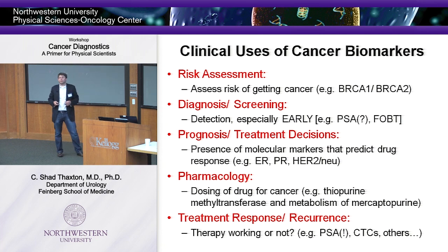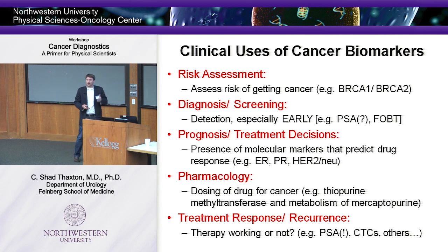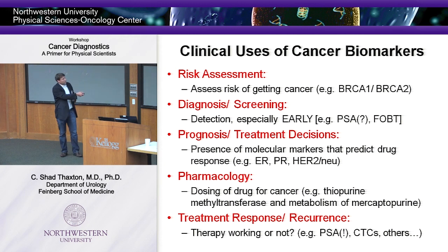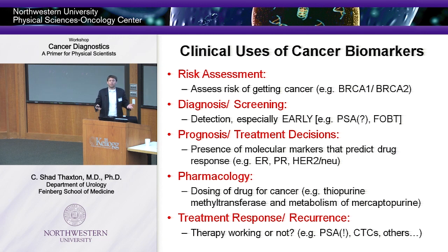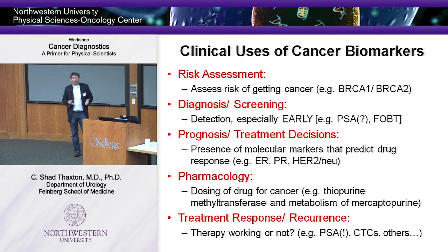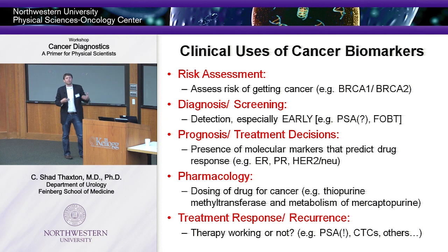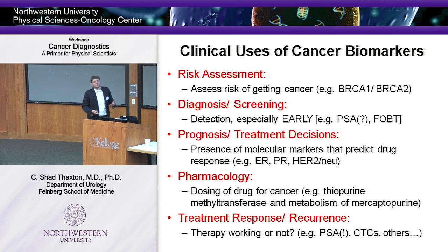Finally, biomarkers are used to monitor treatment response. Once you've diagnosed and treated a patient with cancer, you follow those biomarkers over time to see whether treatment was durable. In the case of prostate cancer and PSA, once you remove the prostate you sample the patient's blood and there should be no PSA left, since it's a molecule made exclusively by the prostate. If PSA begins to rise in patients being followed over time, you're worried the prostate cancer has returned and subsequent therapies are needed.